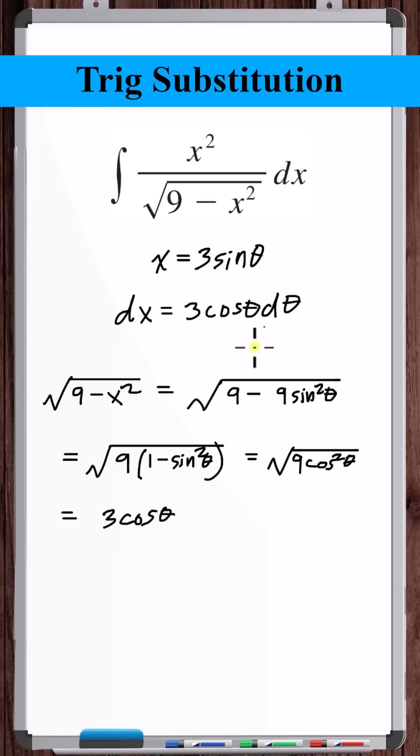So now I'm making the full substitution. We've got three cosine theta in the denominator, x squared is nine sine squared theta, and dx is three cosine theta d theta. Simplifying.